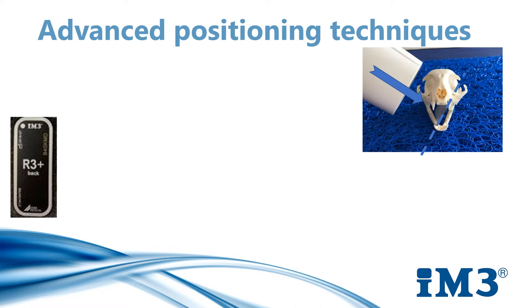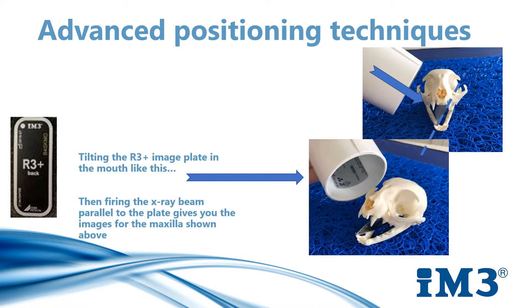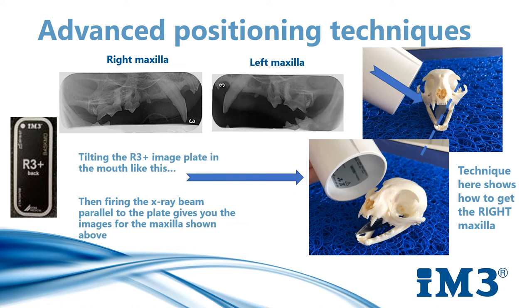Insert the R3 image plate into your patient's mouth, again with no bite guard, at a slight angle as shown in this photo. The dashed line is showing the angle or tilt you want to achieve. You may need to use padding material to achieve this tilt on your plate. Most often, you can rest the plate against the ET tube in your patient's mouth. The tube head is then angled perpendicular to the plate, as shown above. You can see here the x-rays you'll get from this technique.